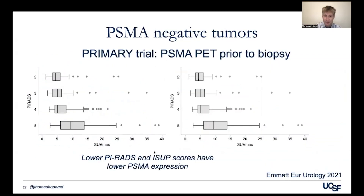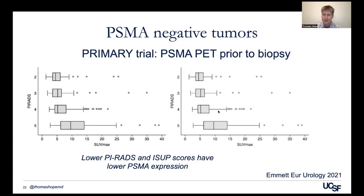At initial staging, data from the PRIMARY trial looking at PSMA PET in patients on active surveillance showed that SUVmax correlates with PI-RADS score — the higher the uptake, the higher the PI-RADS score. Also, the higher the uptake, the higher the Gleason score. So lower uptake is actually better at time of initial staging.